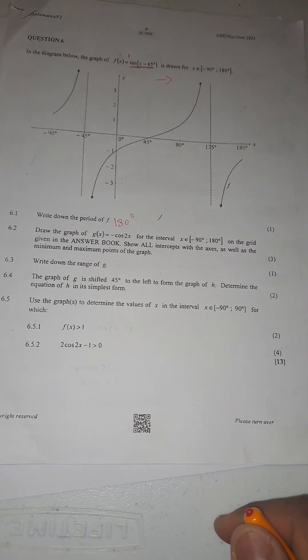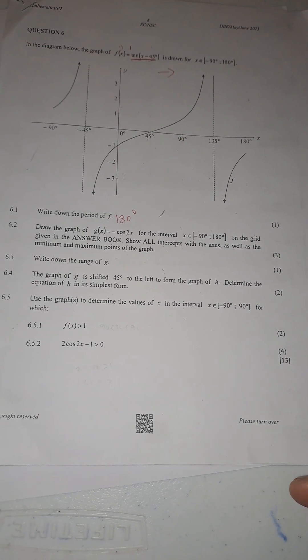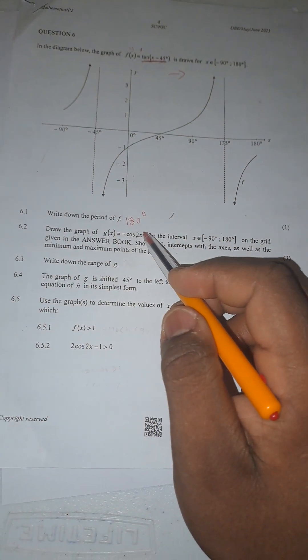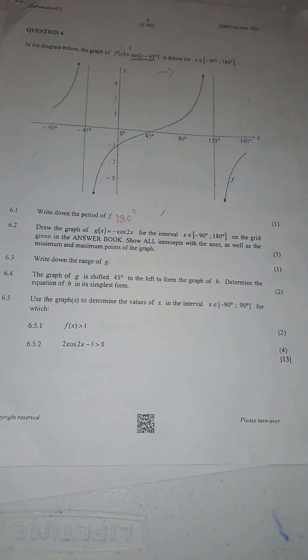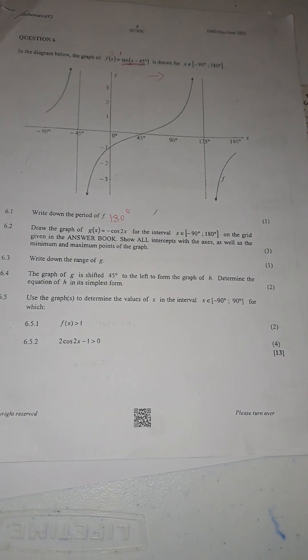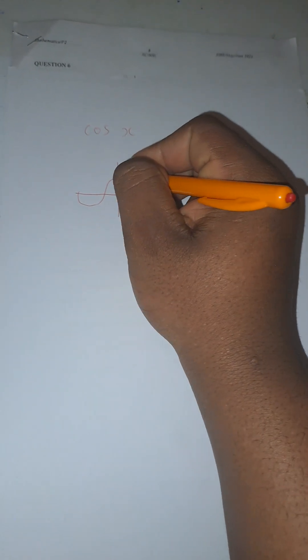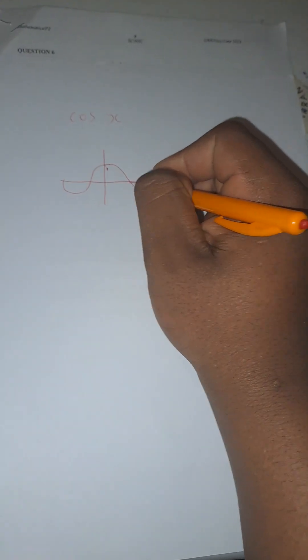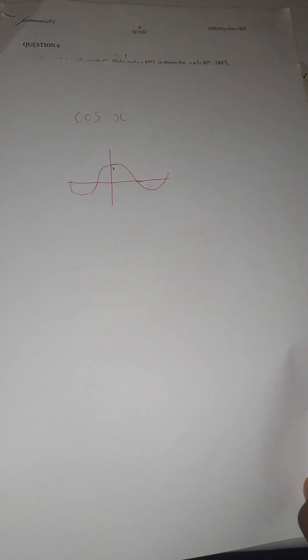Question number two says: draw the graph of g(x) which equals negative cos2x. Now, it is negative, so you need to be careful. You have to know the parent graph. The parent graph of cosine looks like this - it crosses at one, it is maximum at one for both sides, with those intervals there.